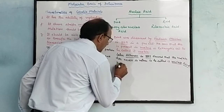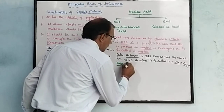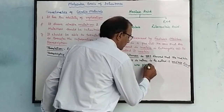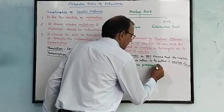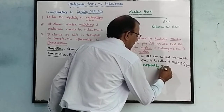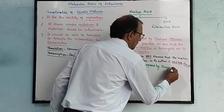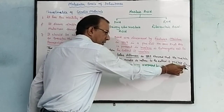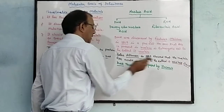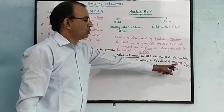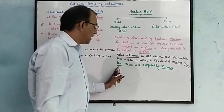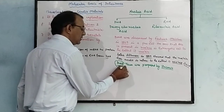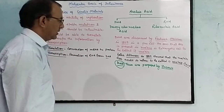So the term nucleic acid was proposed by Altmann in 1889. Later, the nucleic acids DNA and RNA became more clearly defined. The term DNA was proposed by Zacharias.